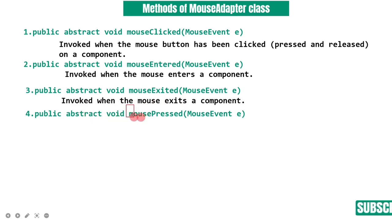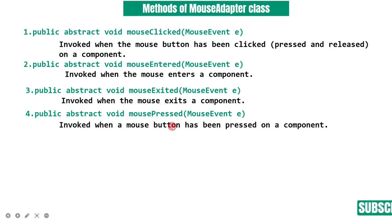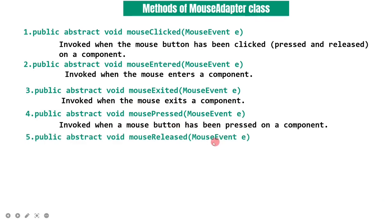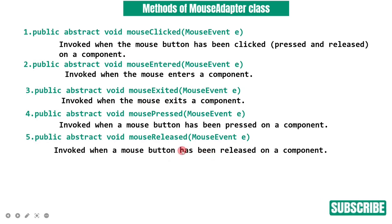When we click the mouse inside the component, the mouseReleased method is invoked. This method is public void mouseReleased, invoked when the mouse button has been released on a component. If we press on a frame or window and release, the mouseReleased method will be executed.